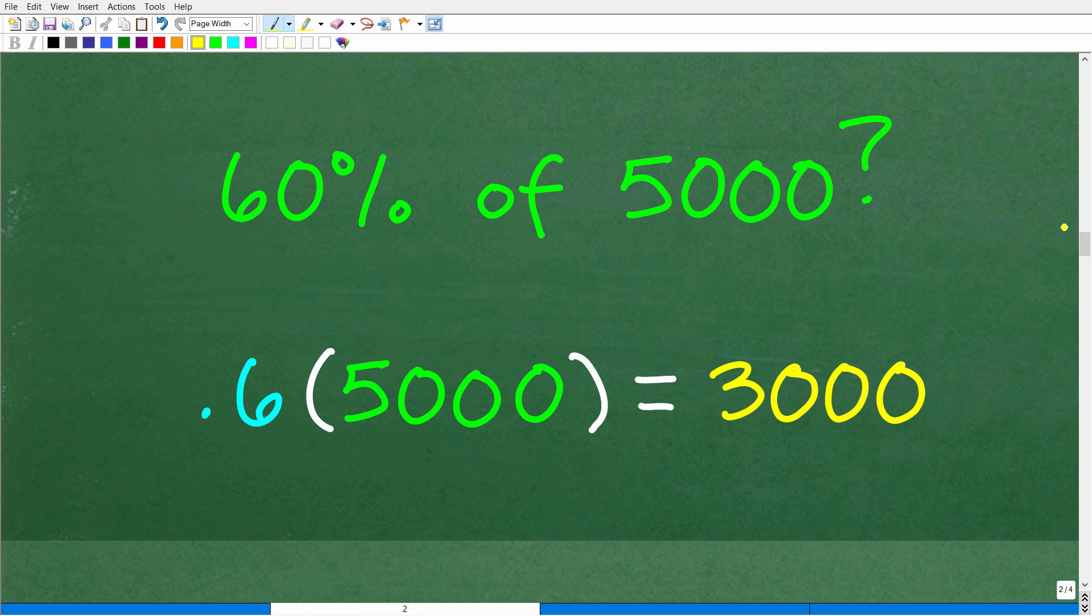But, if you forgot how to find the percent of a number, well, what we need to do is change this percent into a decimal. Okay. So, how do we change 60% into a decimal? Well, what we need to do is simply divide this percent by 100. Okay. So, when you want to change a percent into a decimal, you divide by 100, which is the same thing as moving the decimal point over two places to the left.